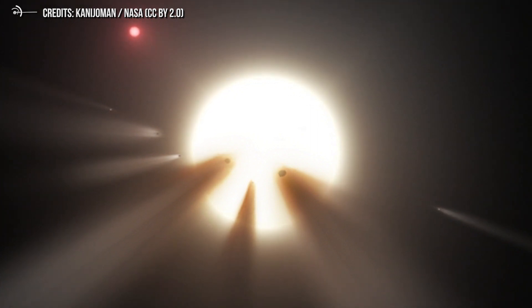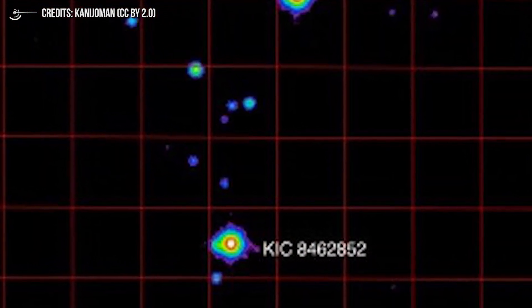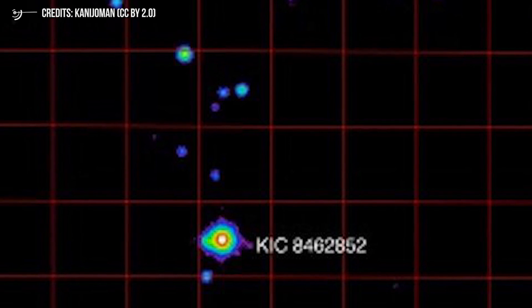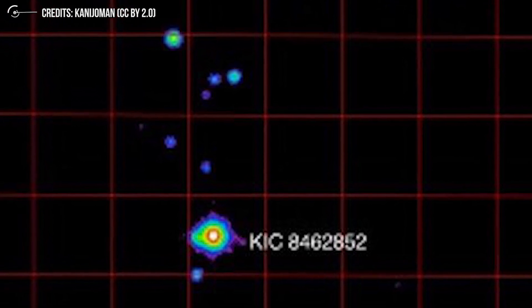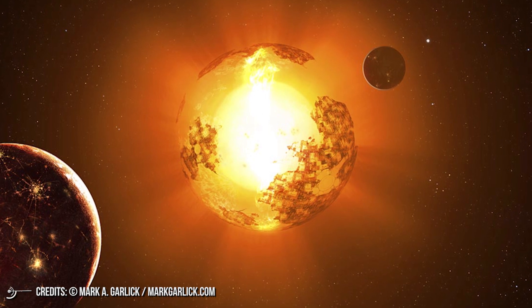Usually planets are responsible for some dips in the light when they pass in front of the star, but 20% was too much. That object had to be something far, far bigger than a planet. Someone proposed weird explanations to that dip in light. Explanations included a swarm of comets or, as a last resort, aliens.